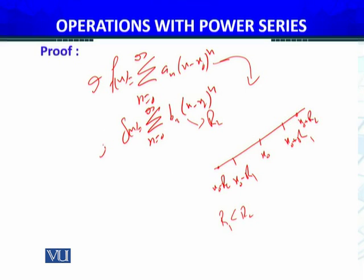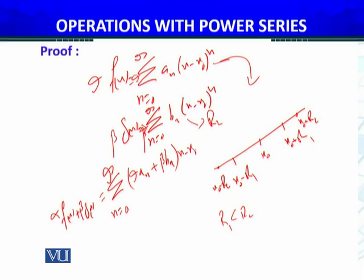multiply them with alpha. Alpha doesn't depend on n, we can take alpha and beta. Multiply g of x with beta. So beta, I can take beta inside the summation, inside the summation I can take them. Add these two: alpha f of x plus beta g of x. That will be summation n equals zero to infinity, alpha a_n plus beta b_n, and (x minus x naught) raised to power n. This will be common, okay?